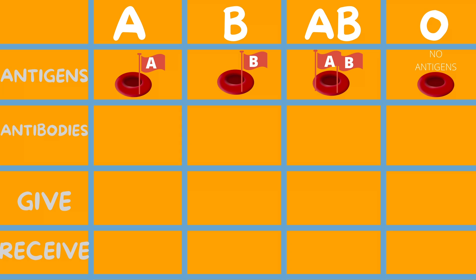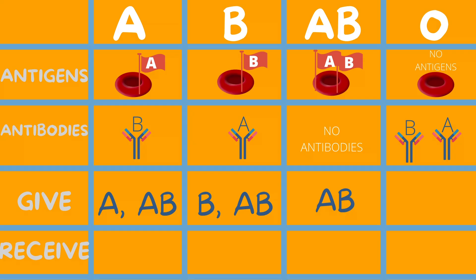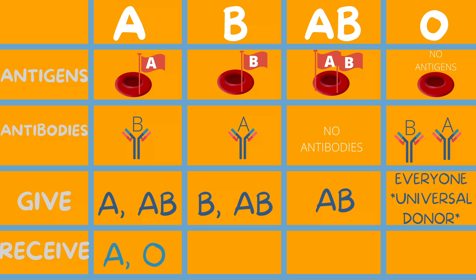Blood type A has B antibodies, blood type B has A antibodies, blood type AB has no antibodies at all, and blood type O has both A and B antibodies. For giving: blood type A can give to A and AB; blood type B can give to B and AB; blood type AB can only give to AB; blood type O can give to everyone — it is the universal donor. For receiving: blood type A can receive from A and O; blood type B can receive from B and O; blood type AB can receive from everyone — it is the universal receiver; and blood type O can only receive from O.